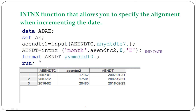Then for AENDT, we use the INTNX function selecting 'MONTH' and we are not incrementing any month — we pass 0 for the increment — giving us the last day of that particular month using the 'END' alignment. You can see AENDTC is the numeric version of the partial date, and AENDT gives the last day: 2007 January 31st, December 31st, and even the leap year 2016 February gives the correct last day of 29th. This is the easiest method to impute the last day of a particular month for partial dates.